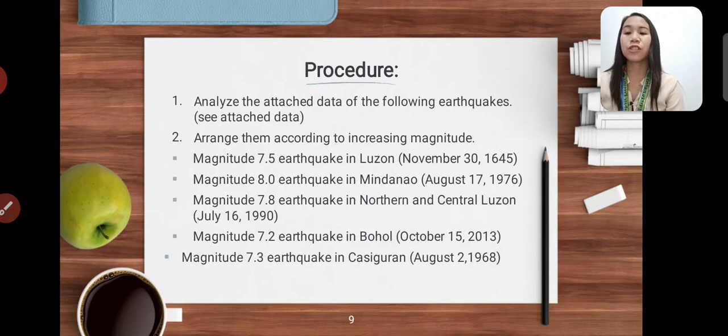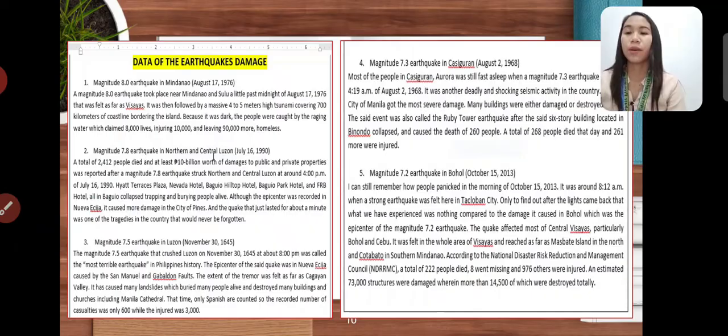Magnitude 7.2 earthquake in Bohol happened on October 15, 2013. Magnitude 7.3 earthquake in Casiguran happened on August 12, 1968. We are going to arrange them according to their increasing magnitude. These are the data of the earthquake damage. Kindly read this data for you to answer the following guide questions.